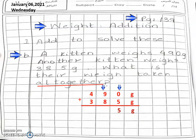Next is 9 plus 8. Keeping 9 in mind, open your 8 fingers: 9, 10, 11, 12, 13, 14, 15, 16 and 17. So 7 we will write here and 1 will go on the top.